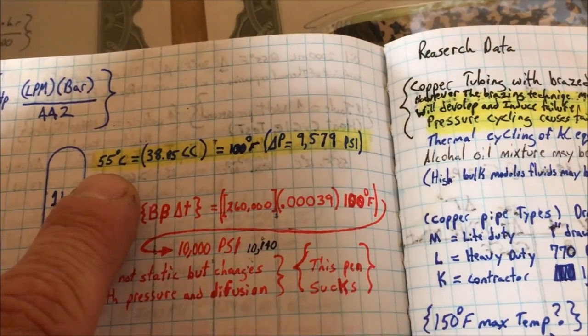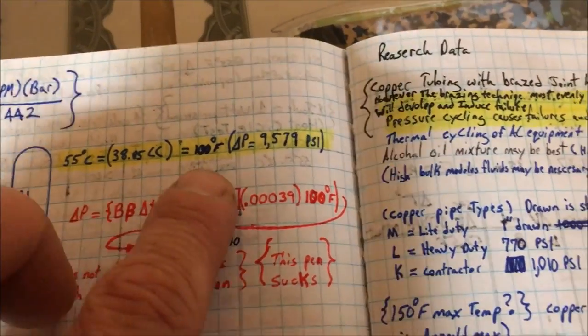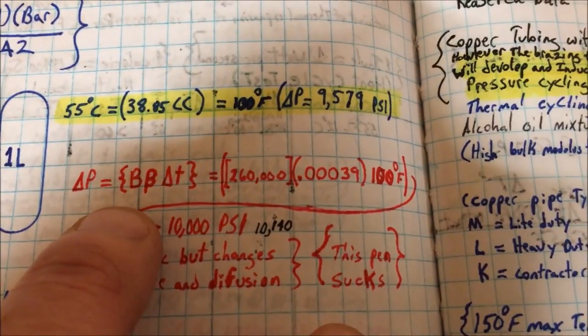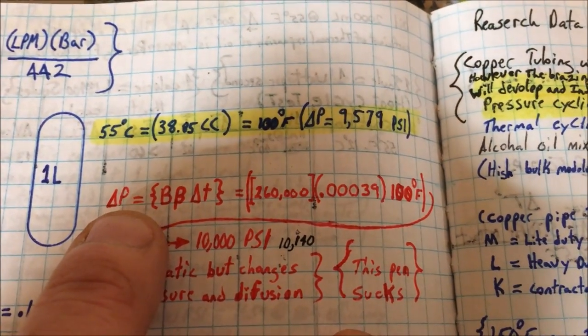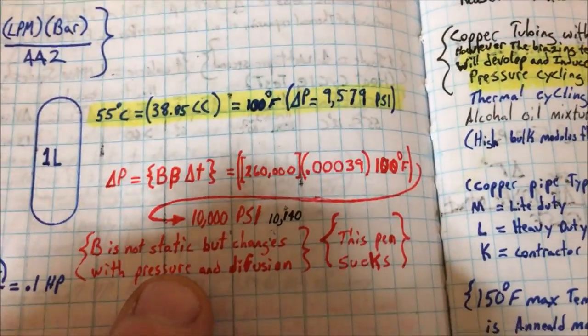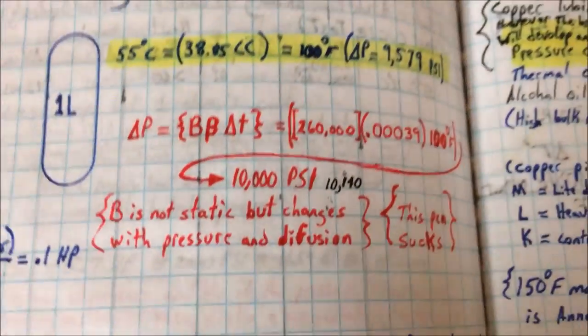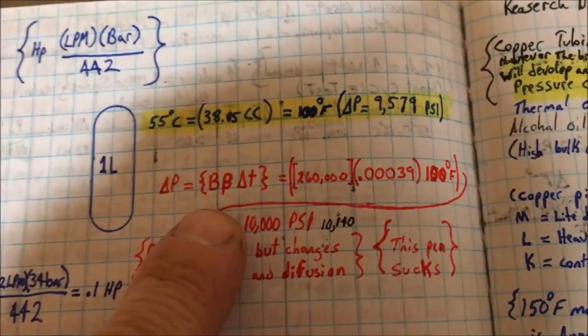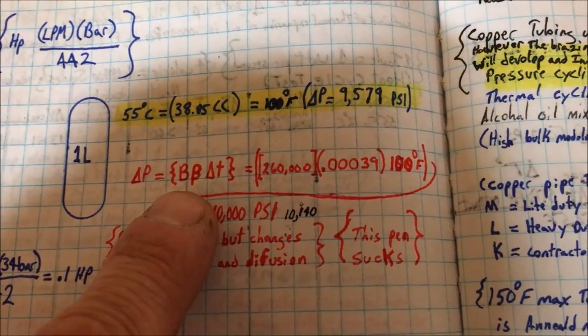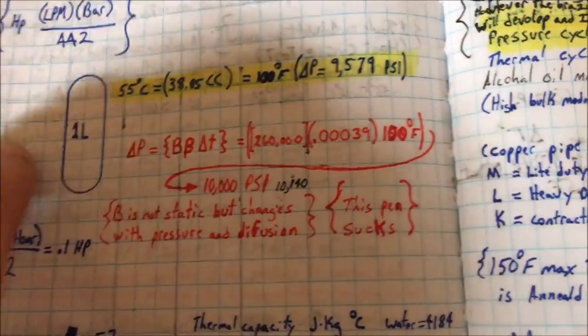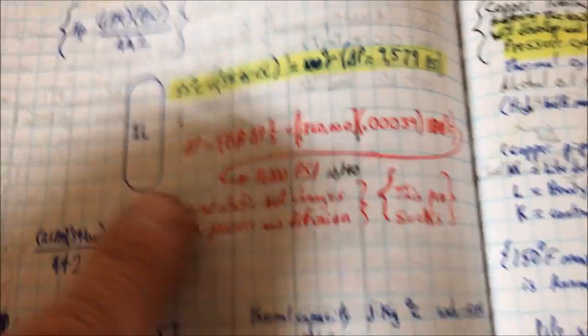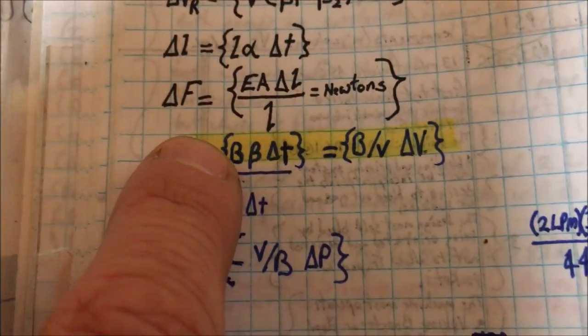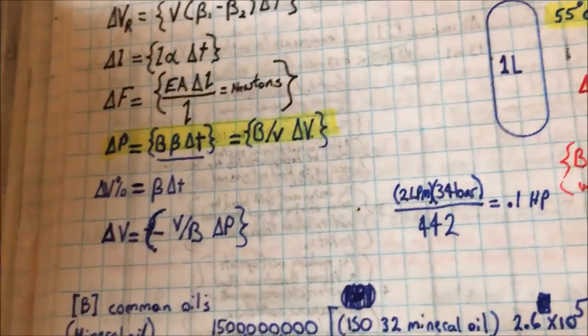The change in temperature is 100 degrees Fahrenheit. The pressure generated through this equation, which is the bulk modulus times the volumetric expansion times change in temperature, gives you 10,000 PSI with just one liter of fluid. This is a pretty nifty equation.